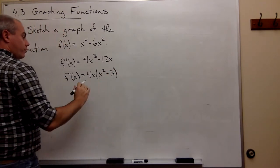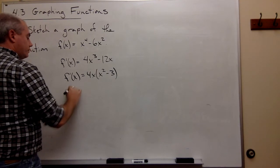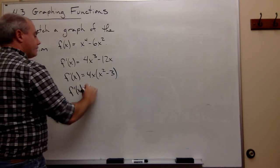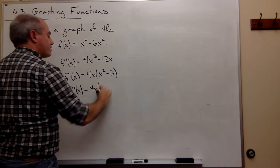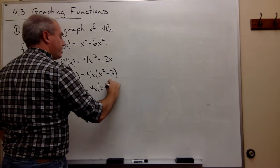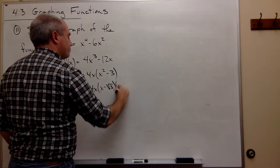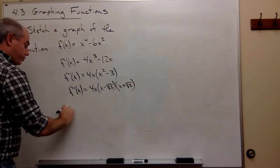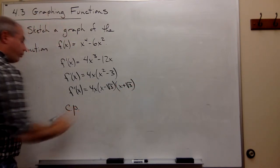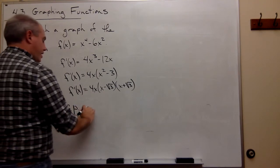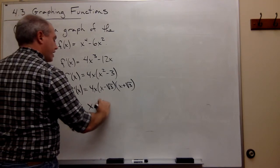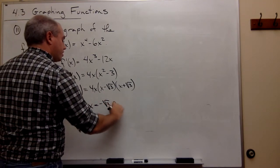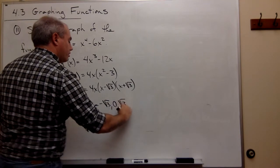In other words, this is equal to 4x times x minus square root 3 times x plus square root 3. So my first order of critical points would be at x is equal to negative root 3, 0, and root 3.